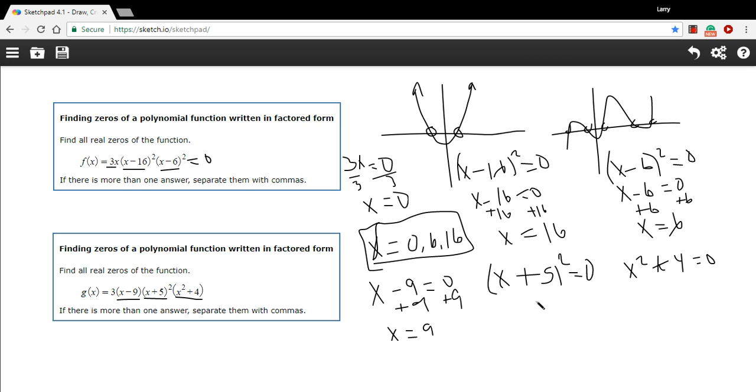And on this one, we'll take the square root of both sides, and I get x plus 5 equals zero. And in this case, I need to subtract 5 from both sides to solve for x. So I get x equals negative 5.